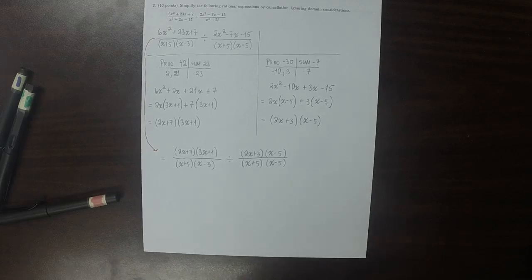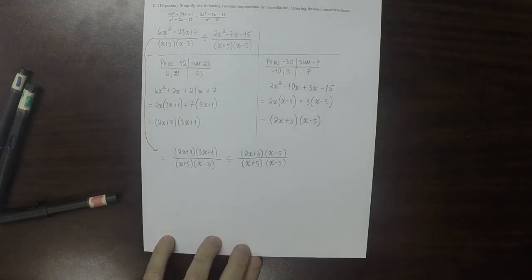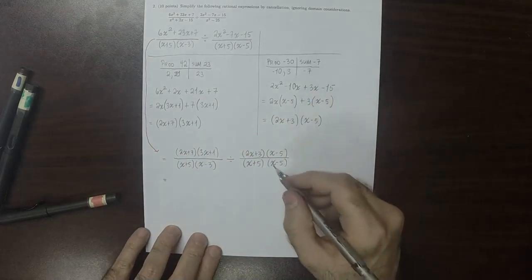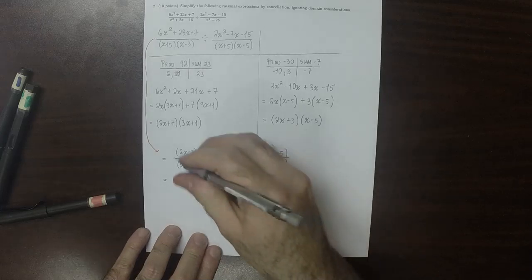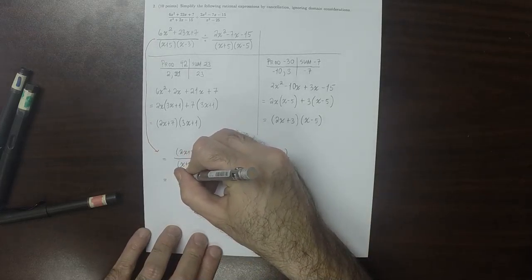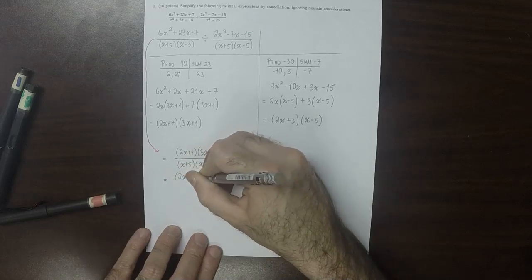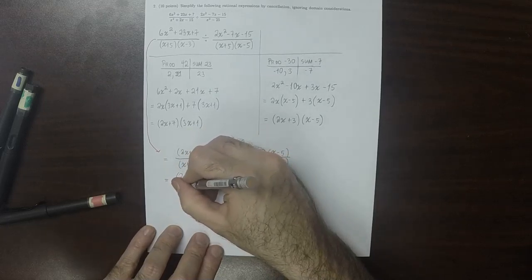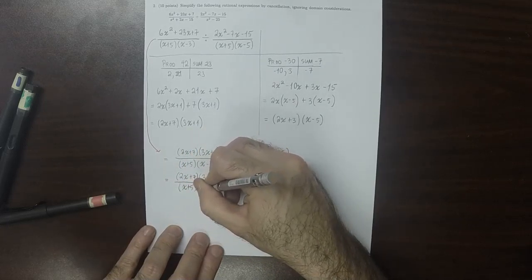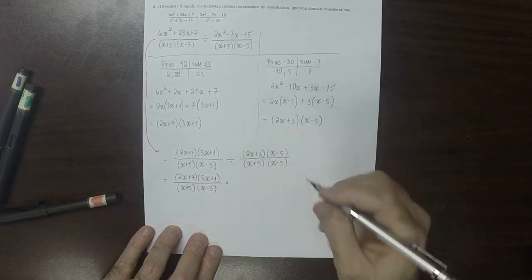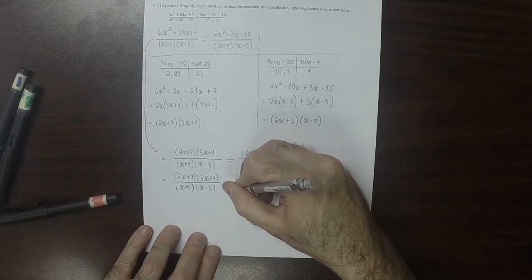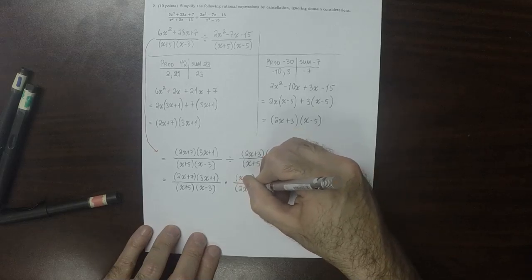So the first thing I'll note is that this x minus 5 can cancel with that x minus 5, so I'll do that now. And I'll also reciprocate the right-hand side. So then we'll get 2x plus 7 times 3x plus 1 over x plus 5 times x minus 3. Now multiplied by, we cancel the x minus 5, and then we get x plus 5 over 2x plus 3.